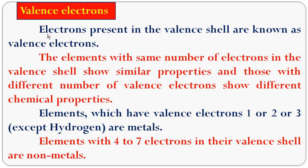What are called valence electrons? The outermost shell contains a number of electrons and that shell is called the valence shell. So the electrons present in the valence shell are known as valence electrons. Elements with the same number of electrons in the valence shell show similar properties. For example, sodium and potassium have the same number of electrons in the valence shell, so they have similar properties.